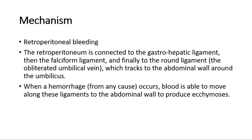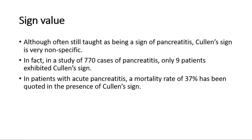For its mechanism, it is mainly due to retroperitoneal bleeding. The retroperitoneum is connected to the gastro-hepatic ligament, then the falciform ligament, and finally to the round ligament, which tracks to the abdominal wall around the umbilicus. When a hemorrhage from any cause occurs, blood is able to move along these ligaments to the abdominal wall to produce ecchymosis, hence causing Cullen's sign.